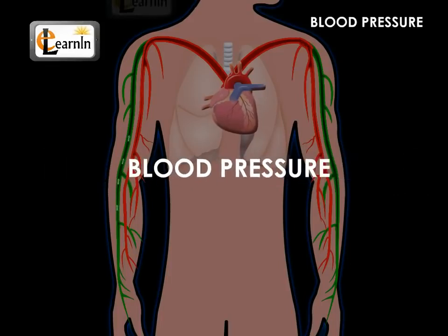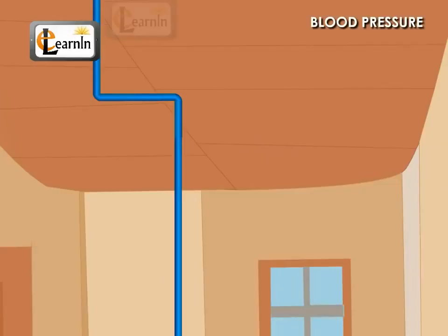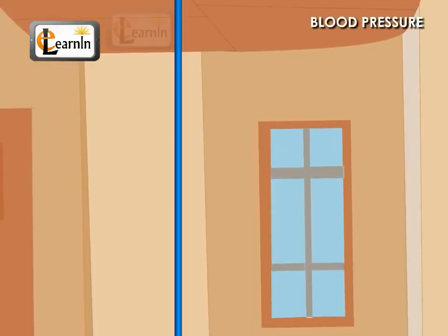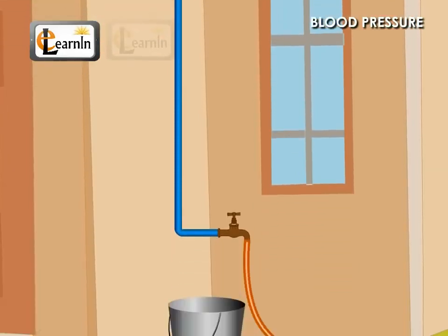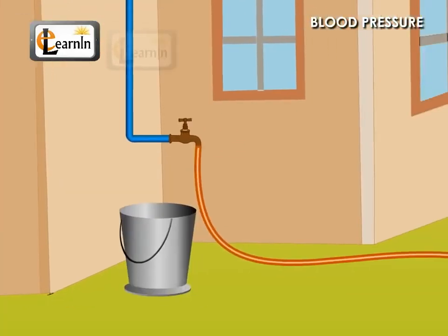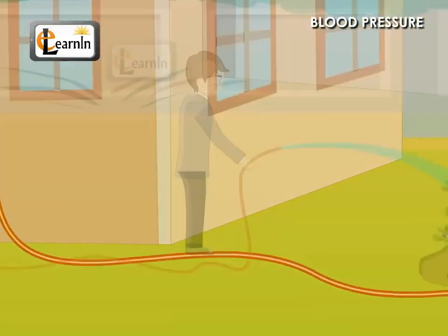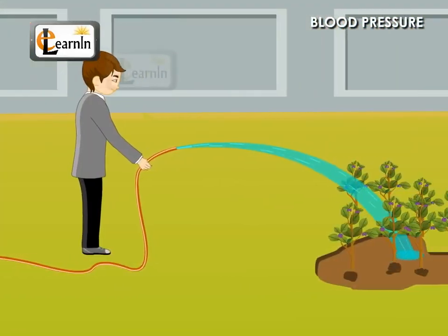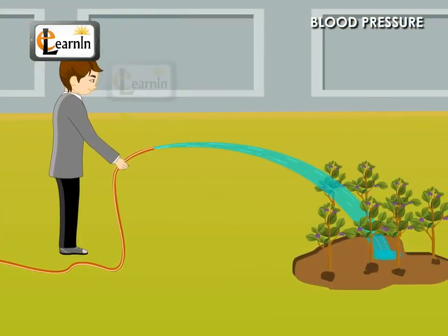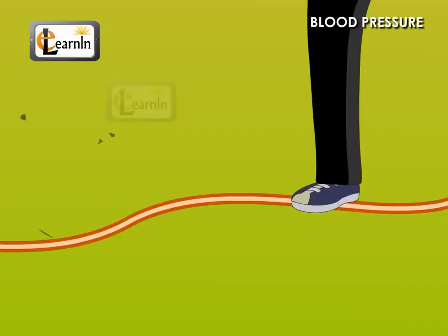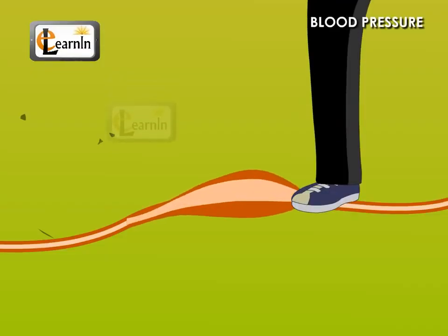Blood Pressure. Water flows with higher pressure when you connect a tube to a pump set operating in your field or house. Also, the tubes burst open if the pressure is very high.